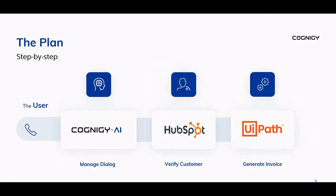It's going to be a three-step process essentially. The user talks to Cognigy, and Cognigy uses natural language understanding and its process orchestration in order to come up with a sensible dialogue. Cognigy will ask the user a number of questions: it needs a contact name, checks HubSpot for valid contact information, asks what the service is for, then combines all the information and sends it to UiPath, which generates the invoice in an Excel sheet.